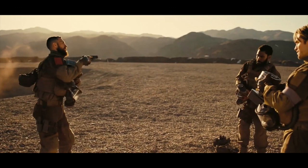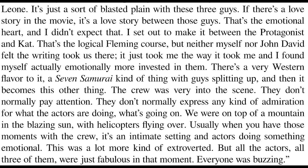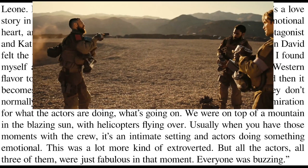The video ends with Nolan's own words from The Nolan Variations about the friendship between the protagonist and Neil and how the final scene played out: 'If there's a love story in the movie, it's a love story between those guys. That's the emotional heart and I didn't expect that — I set out to make it between the protagonist and Kat. That's the logical Fleming course but neither myself nor John David felt the writing took us there. There's a very western flavour to it, a Seven Samurai kind of thing. The crew was very into the scene — we were on top of a mountain in blazing sun with helicopters flying over. Usually those moments are intimate, but this was more extroverted and all three actors were just fabulous. Everyone was buzzing.'